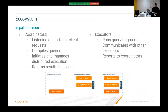The Impala daemon can run in two modes: coordinator mode and executor mode, and it can run in both simultaneously. The coordinator listens for client requests, compiles queries, initiates and manages the distributed execution, and streams results back to clients. The executor's role is to run query fragments, communicate with other executors, and report back to the coordinator.